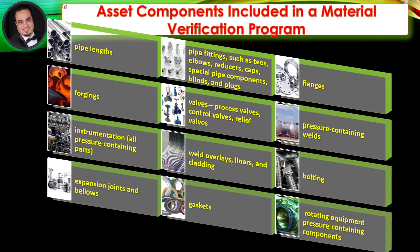Asset components included in a material verification program: Examples of pressure-containing components exposed to process conditions that are found in equipment and systems that may require a material verification program or positive material identification include, but are not limited to: pipe lengths, fittings such as tees, elbows, reducers, caps, special pipe components, blinds, and plugs, flanges, forgings, valves, process valves, and control valves.